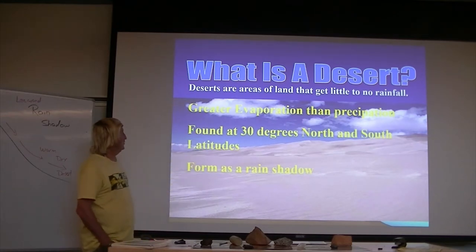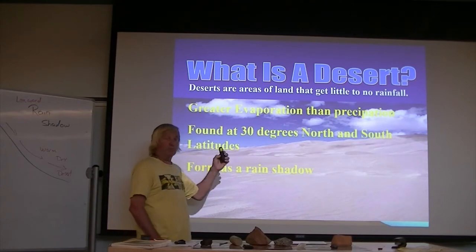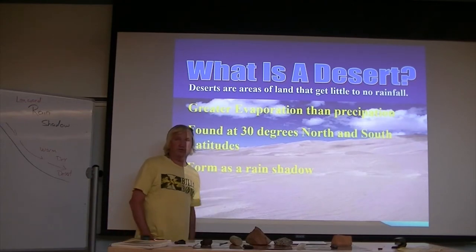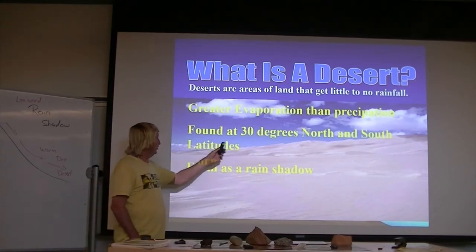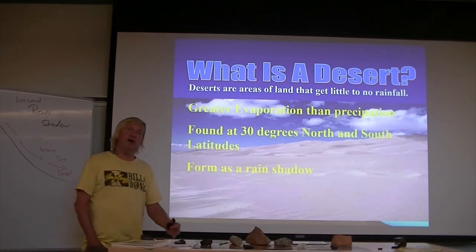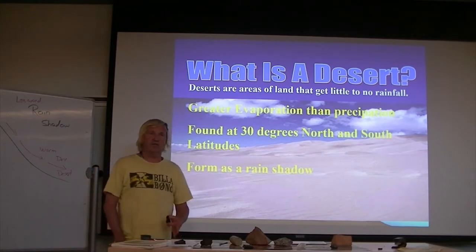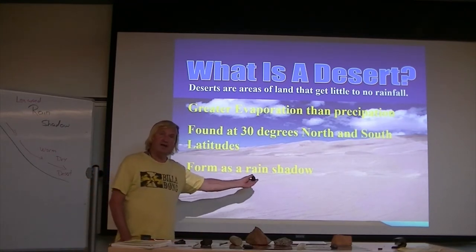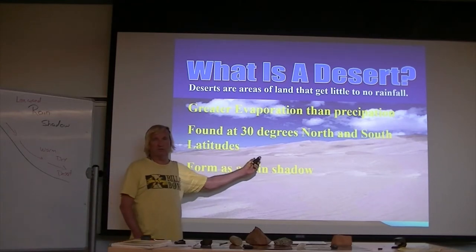Natural deserts are generally found at 30 degrees north and south latitude. That is without the interference of mountain ranges, because mountain ranges can create deserts that lie outside of this 30-degree north and south latitude.